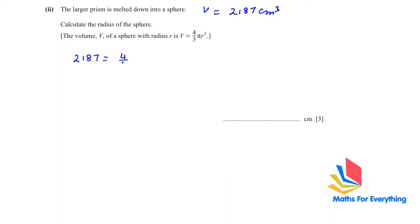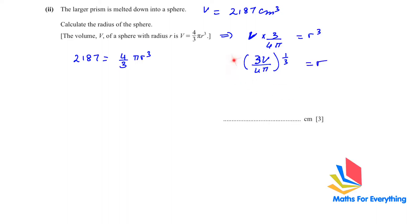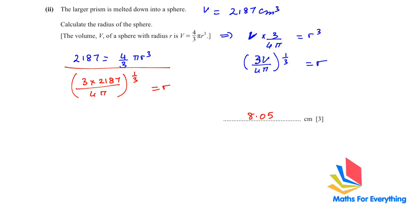Set 2187 = (4/3)πr³. Rearranging to make r the subject: r = cube root of (3V / 4π). Substituting: r = cube root of (3 × 2187 / 4π). Calculating this gives r = 8.05 cm.